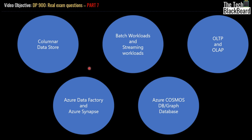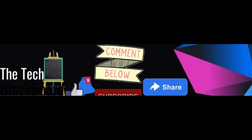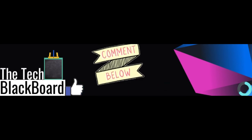I hope you enjoyed part 7. In part 7, we discussed questions around columnar data store, where to use them, and the keywords to look for. We also discussed batch workloads and streaming workloads — the differences and which applies to which scenario. Then we looked at OLTP and OLAP and their characteristics. We also discussed Azure Data Factory, Azure Synapse, and Azure Cosmos DB with Graph DB. If this video added any value to your learning, a like and subscribe is highly appreciated. Share this video to spread learning, and your comments and feedback give me a chance to interact with you. We will meet again in our next video — till then, stay fit, keep learning, and thanks for watching.